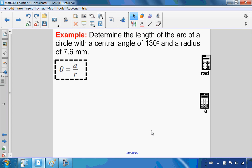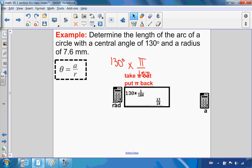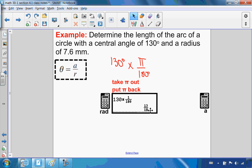Let's look at this first example. Determine the length of an arc of a circle with a central angle of 130° and a radius of 7.6 millimeters. First, I have to change my angle to radians. I want to take 130 degrees and convert it to radians. Since I'm going to radians, the π goes on top. I end up with 13π over 18.